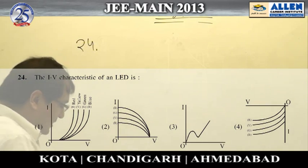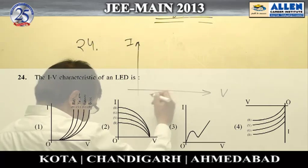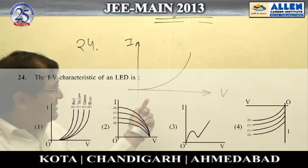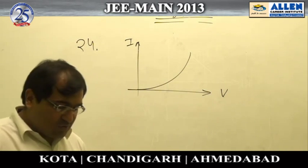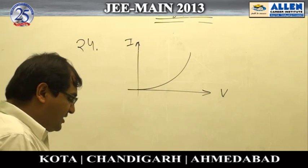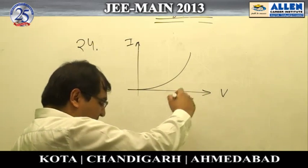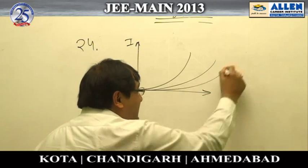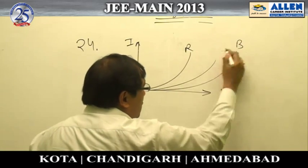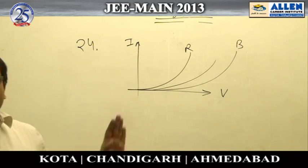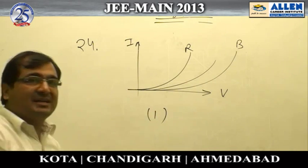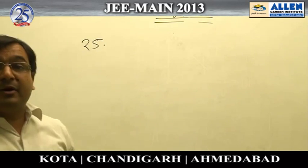For question number 24, since LED is used in forward bias only, the IV graph is of this shape only. The key point is how it varies with frequency. As you increase the frequency of light emitted from the LED, the potential barrier of the diode increases. Since this is red and this is blue, as frequency increases the potential barrier increases — that makes option 1 the correct answer.